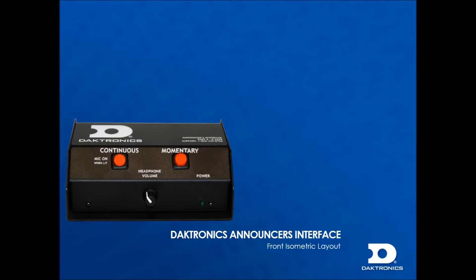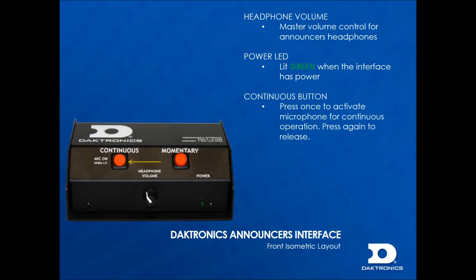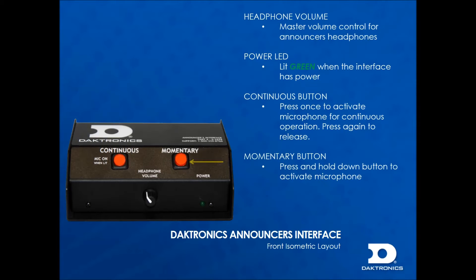On the front of the interface is the headphone volume knob to control the master volume of the audio coming into the headphones. Located next to it is a power LED indicating that the interface has power. On the top of the interface are the continuous and momentary buttons. The continuous button is pressed once to activate the microphone for continuous operation and again to mute the microphone. The momentary button is held down to activate the microphone and released to mute the microphone. The continuous button also doubles as the mic live LED to indicate that the microphone is live.